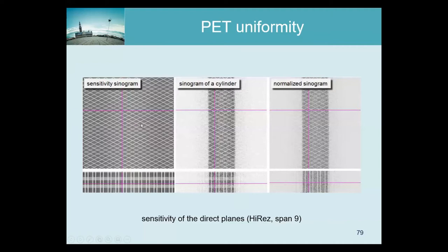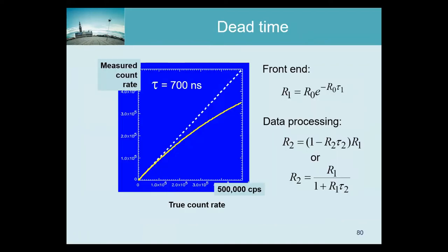This sinogram is made from a very long measurement using a model of the PET camera, which allows the software to eliminate almost all of the noise. We know this is a sensitivity measurement of a cylinder, so we can correct it for this sensitivity and get a corrected image. The variation in actual sensitivity has been eliminated. We cannot correct for the gaps, so the gaps are still there — but this is a uniform image, as good as we can get it.